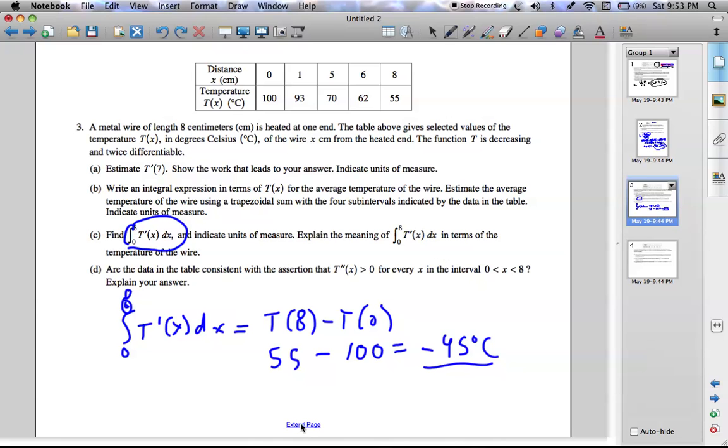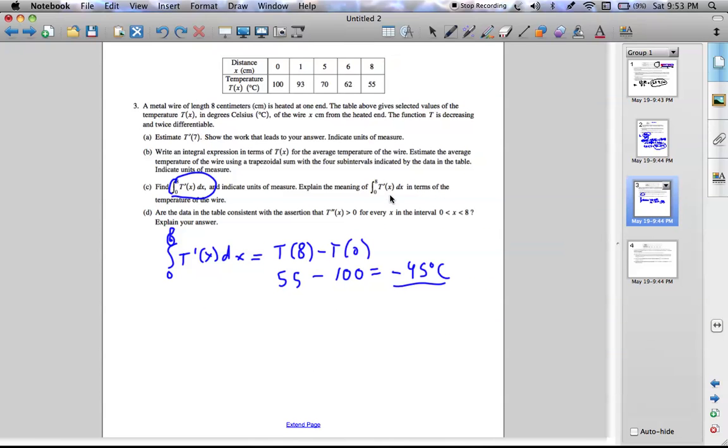And it asks you to explain the meaning of that. Well, the meaning is it's the displacement in temperature. It might not be easy to see from this, but it's easy to see from this because it's just the last bit of temperature subtracted by the first bit of temperature.